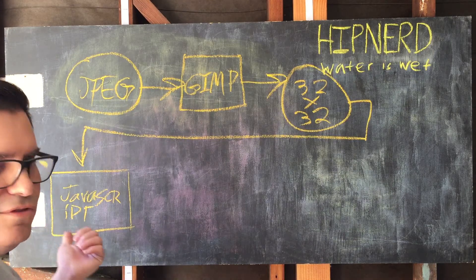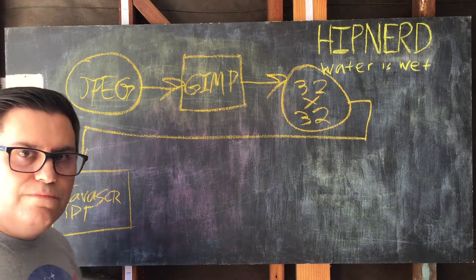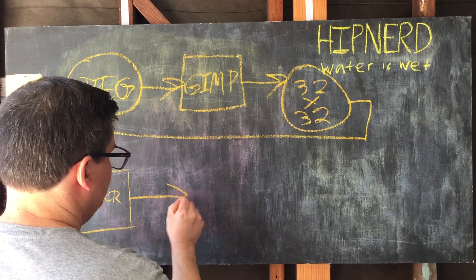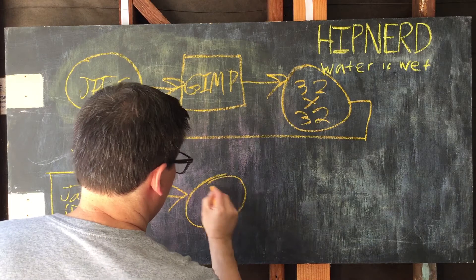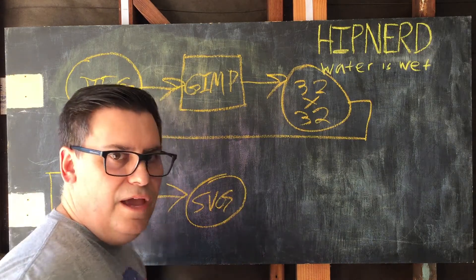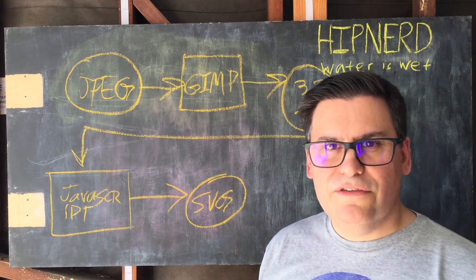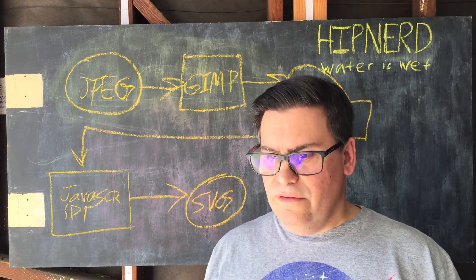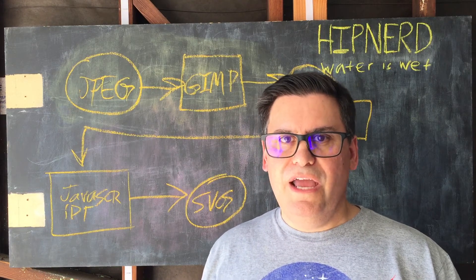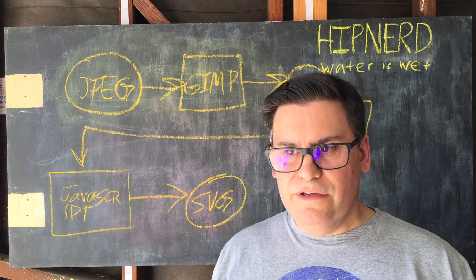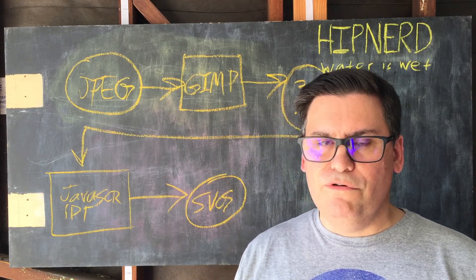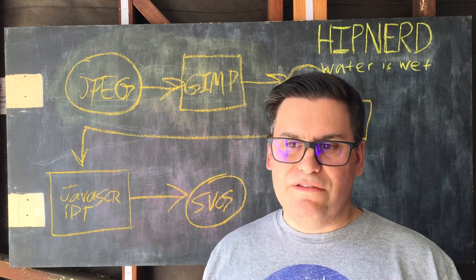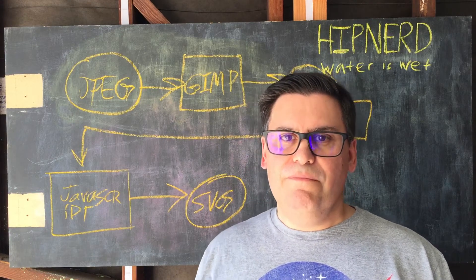The JavaScript program outputs an SVG file. Basically what it does is take every pixel of the input image and generate a square that is sized proportional to the brightness of that pixel, and that's how I generate the image.